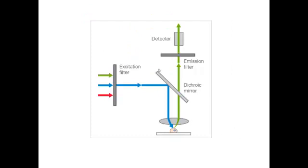In the fluorescent microscope, light from the source falls through the excitation filter onto the dichroic mirror and then falls on the sample. This sample is stained with chemicals or agents known as fluorophores, which are used to label defined cellular structures, for example some protein structures or sub-cellular structures like mitochondria.